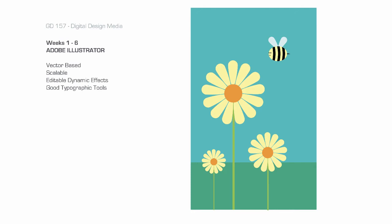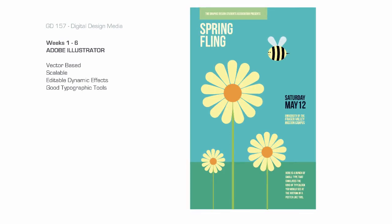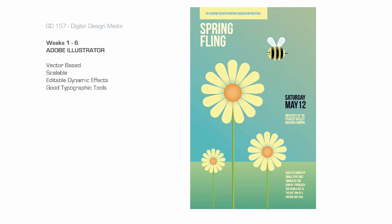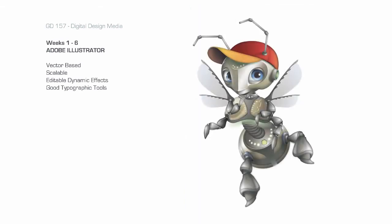Another thing we can do with Adobe Illustrator is use its type tools. Adobe Illustrator has some very strong type tools and we will explore typography using Adobe Illustrator. Illustrator also has some wonderful effects and gradients tools that allow us to take our imagery into some interesting areas. One thing I really enjoy about Illustrator is that it can handle things like posters very well, but it can also do complex illustrations, which I will be showing you in this class.